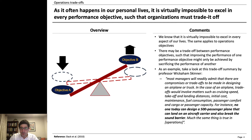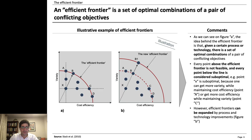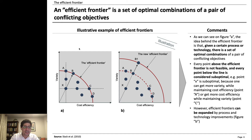But that leads to the efficient frontier. The efficient frontier is a set of optimal combinations of a pair of conflicting objectives. Let's take a look at this example with variety and cost efficiency. In this illustration, everything that lies on this red line lies on the efficient frontier.